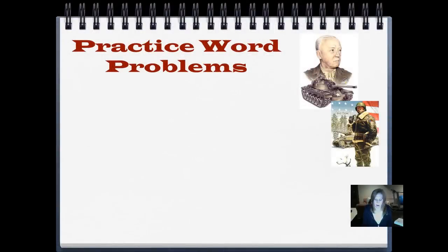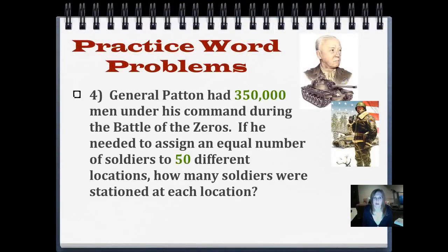So here's our practice word problem. General Patton had 350,000 men under his command during the Battle of the Zeros. If he needed to assign an equal number of soldiers to 50 different locations, how many soldiers were stationed at each location? We're obviously going to divide that group of men up into different stations, so let's use our mental math strategy, Battle of the Zeros, to figure that out and push play when you're ready.